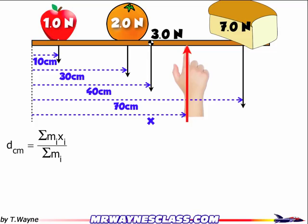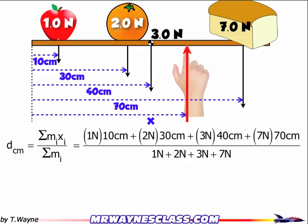Alright, so here's my formula and here's how we're going to apply it. When summing up the mass and distances: 1 newton times 10 centimeters, 2 times 30 centimeters, 3 newtons times 40 centimeters, 7 newtons times 70 centimeters, divided by the sum of all the weights. I'm taking my pivot point from the far left. I can really take anywhere on the board, but this is simple and always works, makes everything positive as well. When I do the math, I find out that it's 52 centimeters.